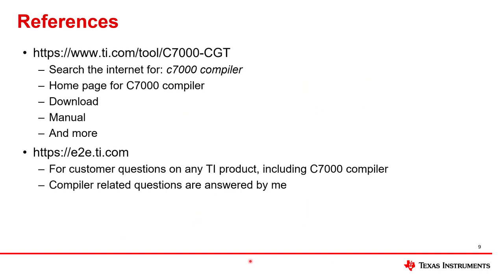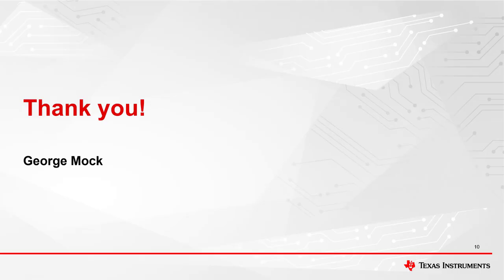I'll close this video with two references. The first is the homepage for the C7000 compiler — if the full web address is too much to type, search the internet for 'C7000 compiler' and the first result from all the search engines I've tried returns that web address. That's where you can download the compiler, the manual, and more. The second reference is e2e.ti.com, for customer questions on any TI product including the C7000 compiler — if your question is related to the compiler or a similar tool, it will be answered by me. Thank you for watching.